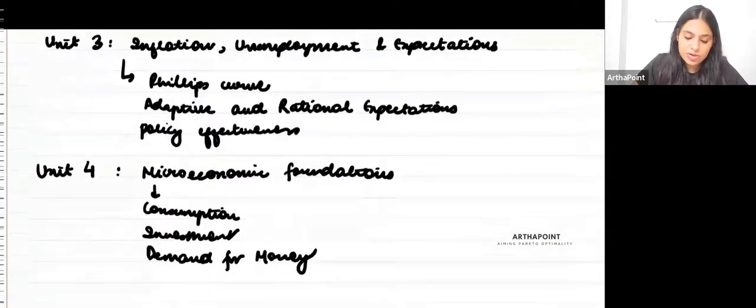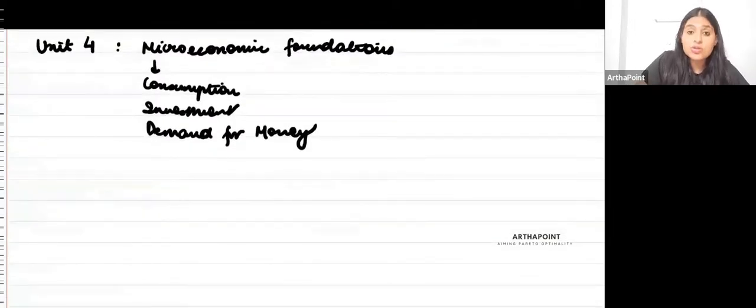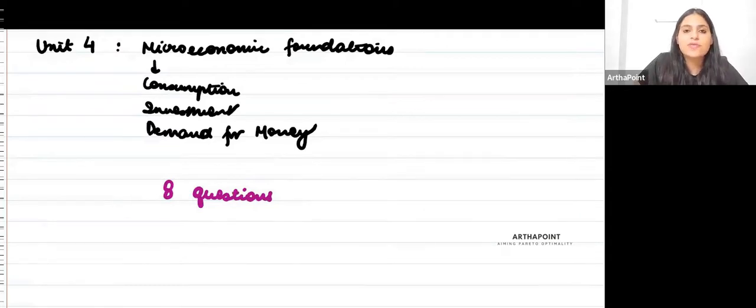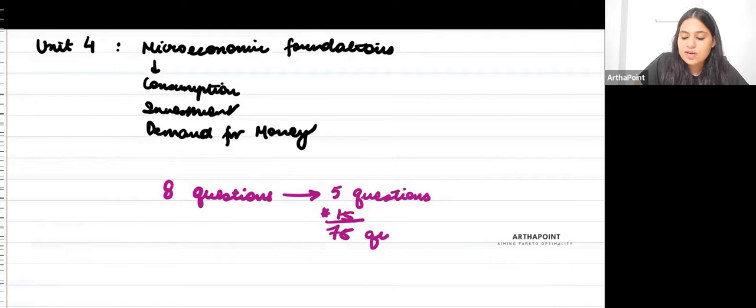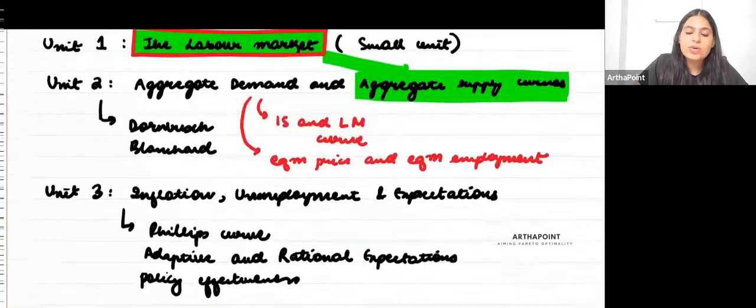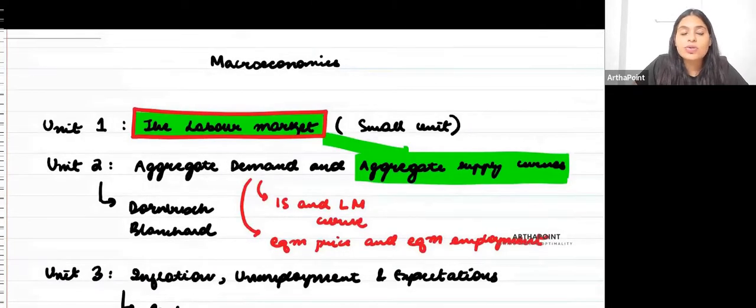In macroeconomics, usually eight questions would come in the exam. During the period of COVID-19, when students went from online to offline, they increased the time and number of options. Out of the eight questions, you are supposed to do five questions. Each is going to carry 15 marks, so it is going to give you a 75 marks paper.